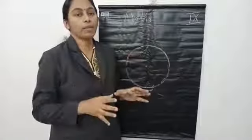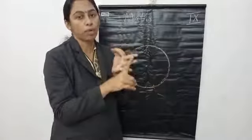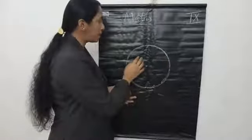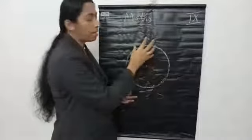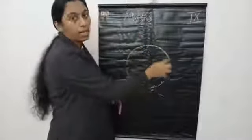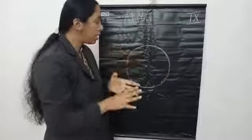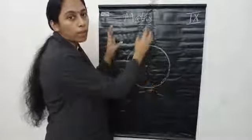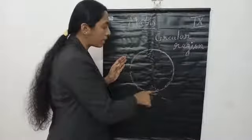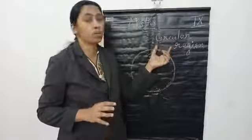Now the next point is: this circle divides the plane into three parts. The first is inside the portion of the circle, that means the interior of the circle. The second is the circle itself, that means the boundary. And the third is the exterior part, that means the outside portion of this circle. And one more thing: the circle and the inside portion, that means the interior portion together, is known as the circular region.